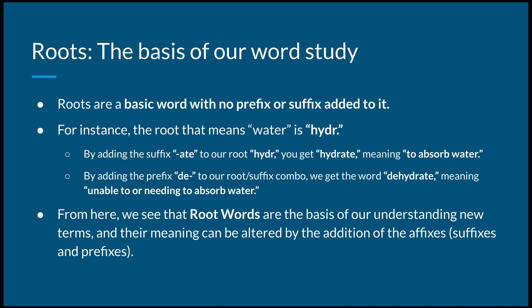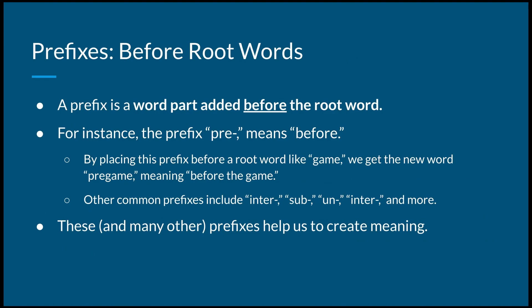Next, let's see how affixes — both suffixes and prefixes — work. Let's start with prefixes, which go before root words. A prefix is a word added before the root word. For instance, the prefix pre-, as in the word prefix, literally means before. By placing this prefix before a root word like game, we get a brand new word like pregame, meaning before the game. Other common prefixes include inter-, sub-, un-, and even more. These and many other prefixes help us to create meaning by adding them to root words.